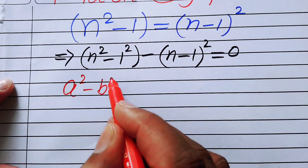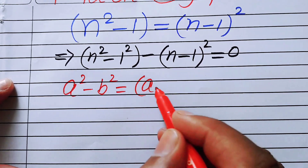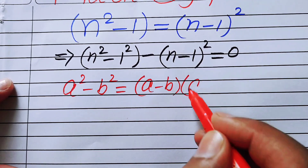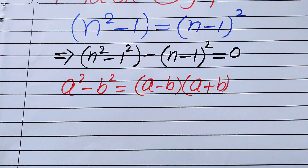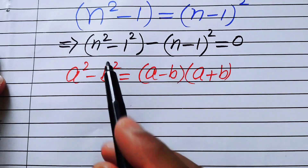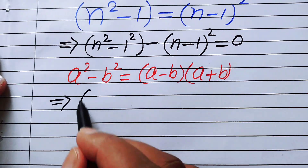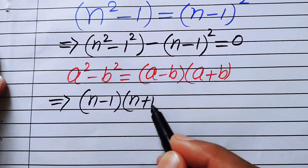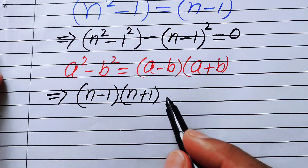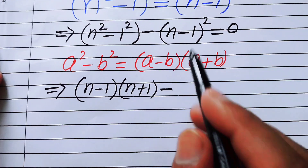After this step, I can use the difference of squares identity. You know about this identity: if we have a squared minus b squared, it equals a minus b times a plus b. I can apply this formula to the first term, so you get n minus one times n plus one, minus n minus one whole squared.